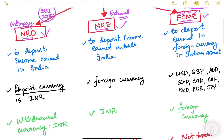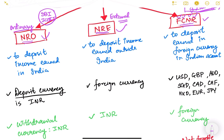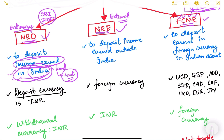The NRO account, non-resident ordinary account, is used by NRI people to deposit income earned in India. For example, if an NRI person owns land in India and has given it on rent to a factory, that factory pays rent in rupees — say 50,000 or 1 lakh per month. That money can be deposited in the NRO account because it is income earned in India.